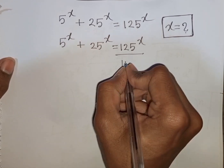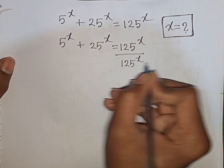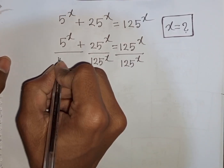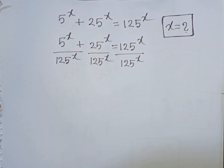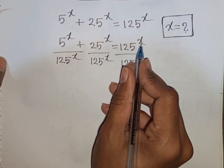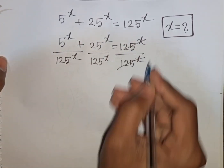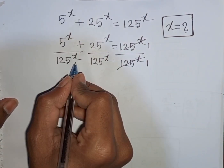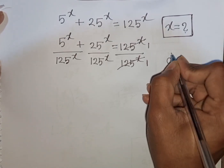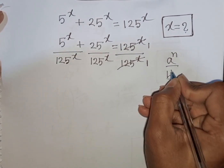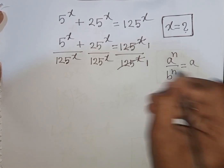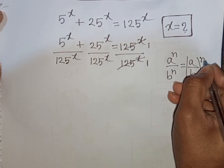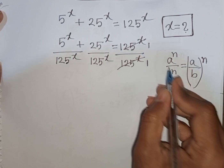After dividing by 125 power x on both sides, the 125 power x terms cancel. We see the same power x but different bases. Remember the formula: a power n over b power n equals (a over b) power n — same power but different base.